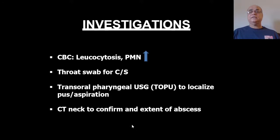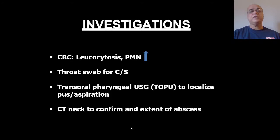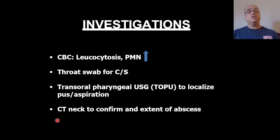This is usually a clinical, straightforward diagnosis, but routine investigations include a complete blood count where we expect leukocytosis with polymorphonucleocytosis. A throat swab for culture and sensitivity can be sent for proper antibiotic selection. If still in doubt, transoral pharyngeal ultrasonography (TOPU) can be performed — this not only helps localize and confirm the presence of pus but also allows ultrasound-guided aspiration for simultaneous diagnosis and treatment. A CT neck can also confirm the diagnosis and extent of the pus.